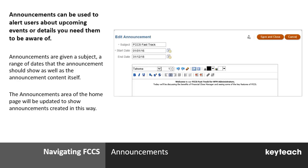Announcements can be used to alert users about any particular information relevant to FCCS. You can give them a subject and define a range of dates with a start and end date. You can have multiple announcements, and those announcements can be highly formatted and can contain links to other web pages if required.